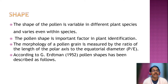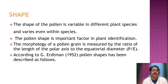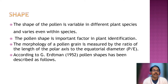Now the next important character of the pollen grain is the shape. The shape of the pollen grain is different in different plants — it is variable among different plant species and even within a species, it may vary within an individual plant. Pollen shape is an important factor in plant identification, so it is used in taxonomy to identify and classify genera to different taxa. The morphology of pollen grain is measured by the ratio of the length of the polar axis to the equatorial diameter.